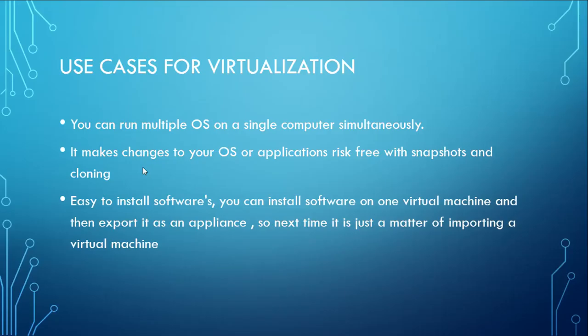Another use case is when you are testing things in your lab or even in production environments. For example, if you are applying a patch on a server in a production environment, that can be risky. To avoid that risk, you can use a technology feature called a snapshot. You take a snapshot before making your changes or installing your patch, and if something goes wrong, you can restore to that snapshot. Your machine will be back to the state it was in before the snapshot. We'll talk about snapshots later in this course.